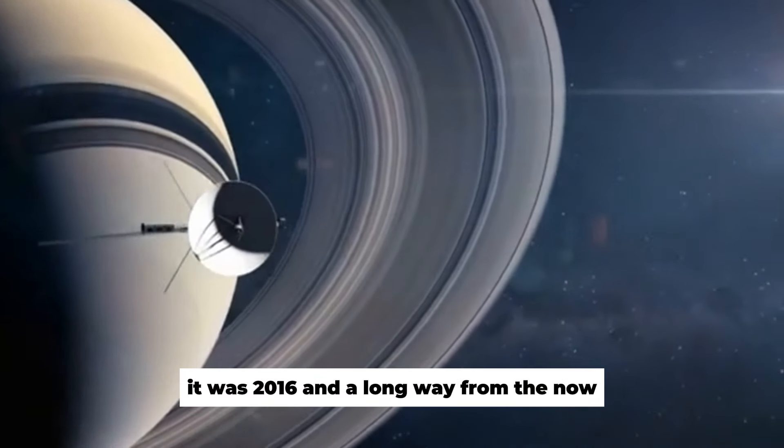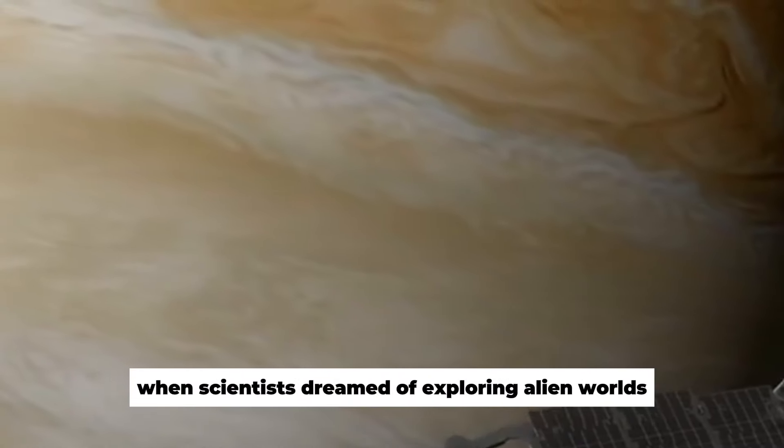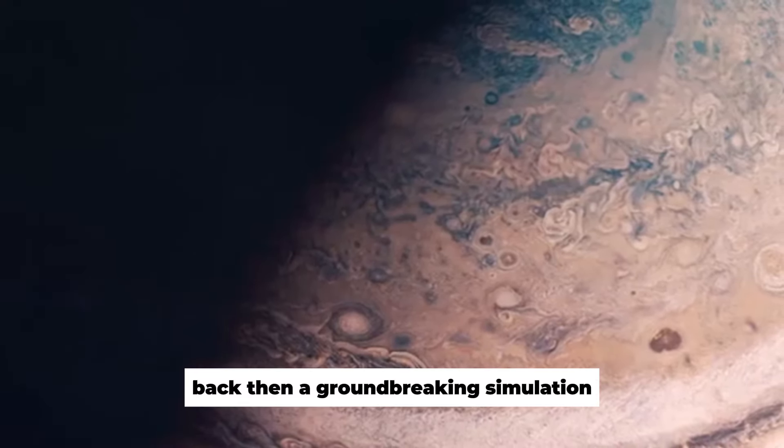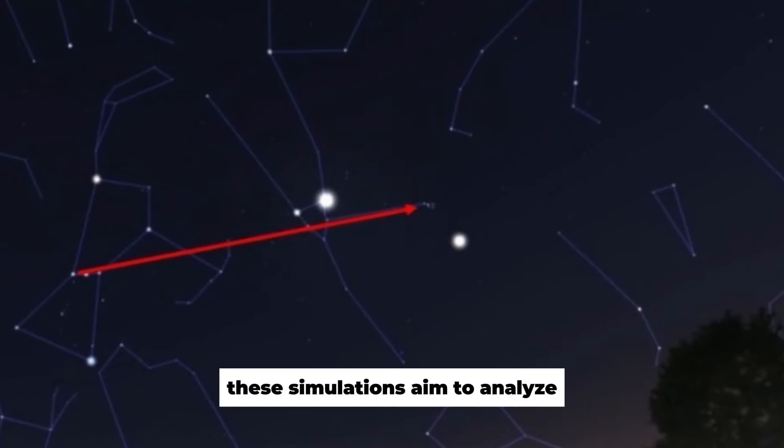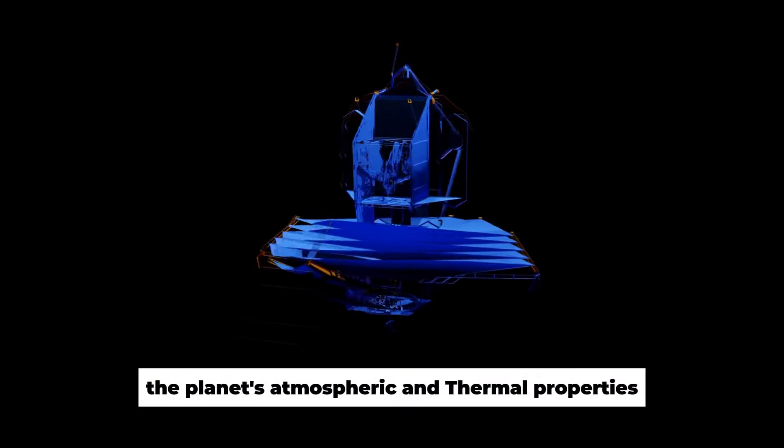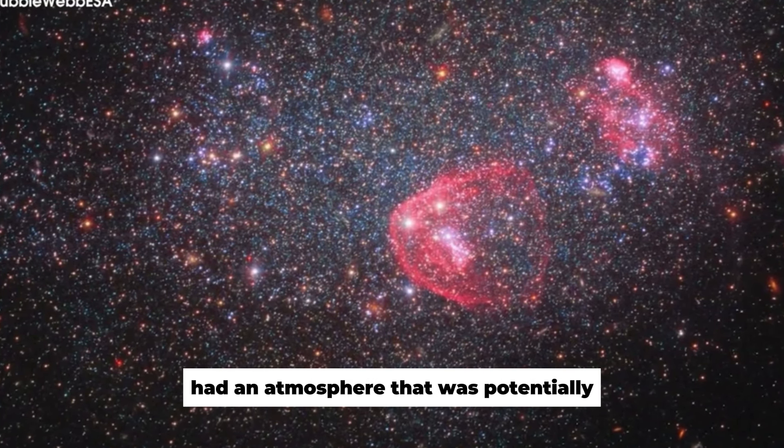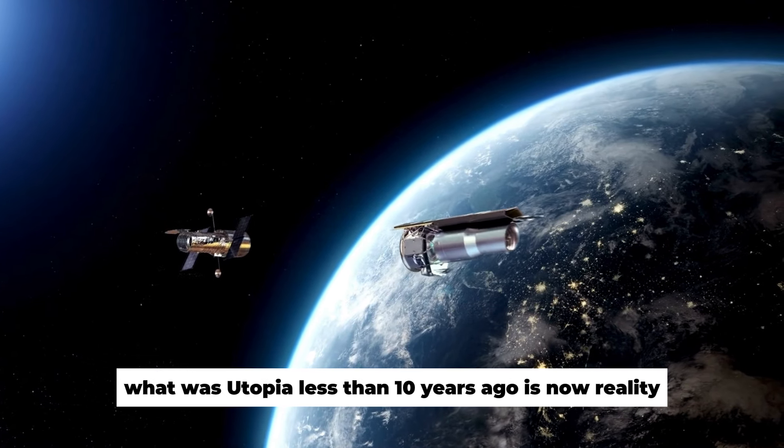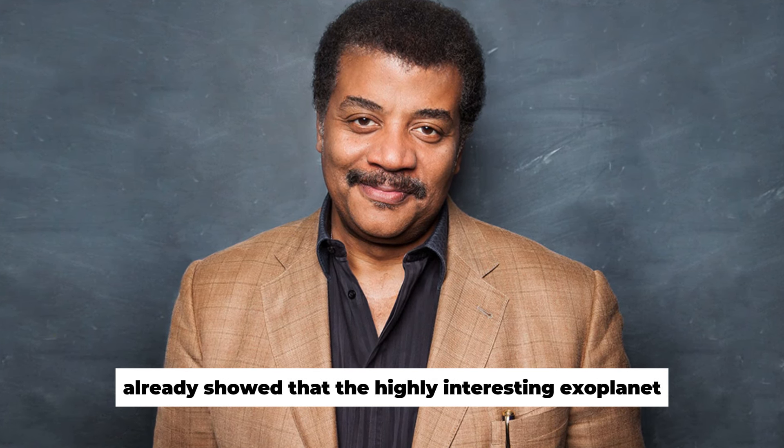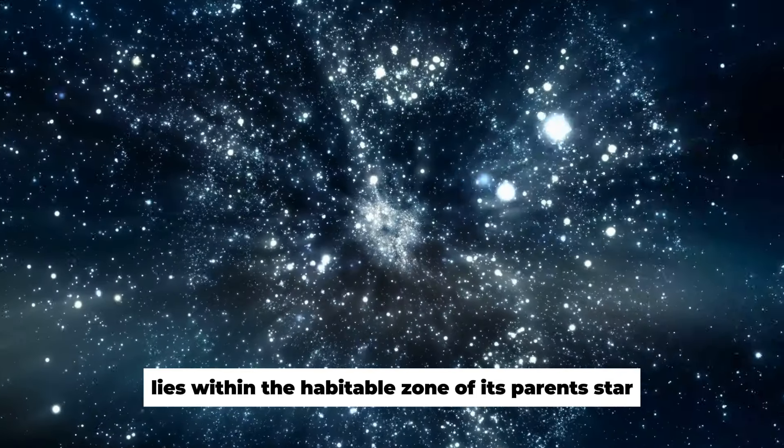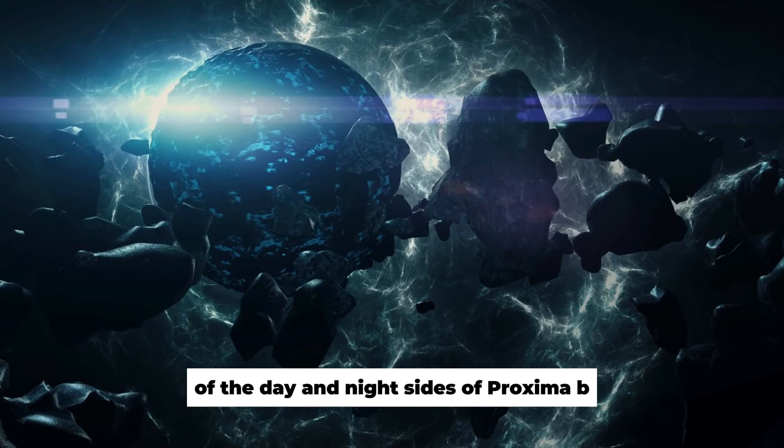Simulation of the surface of Proxima b. It was 2016 and a long way from the now very real era of James Webb, when scientists dreamed of exploring alien worlds. Back then, a groundbreaking simulation predicted how the James Webb Space Telescope would study the surface of the exoplanet Proxima b in an unknown future. These simulations aimed to analyze the planet's atmospheric and thermal properties. By 2016, researchers were already dreaming of finding out whether Proxima b had an atmosphere that was potentially hospitable to life. What was utopia less than 10 years ago is now reality. At that time, simulations of Proxima b's unique orbit already showed that the highly interesting exoplanet lies within the habitable zone of its parent star, Proxima Centauri. The JWST will carry out regular and comprehensive observations of the day and night sides of Proxima b.